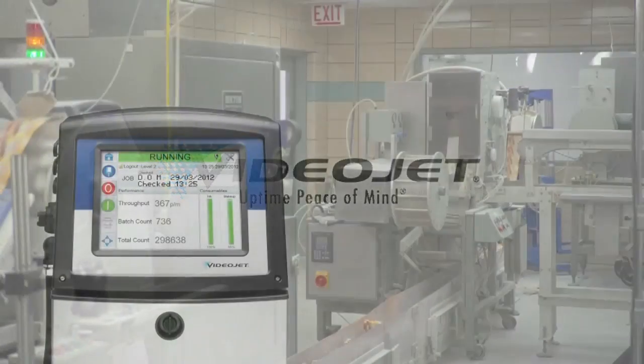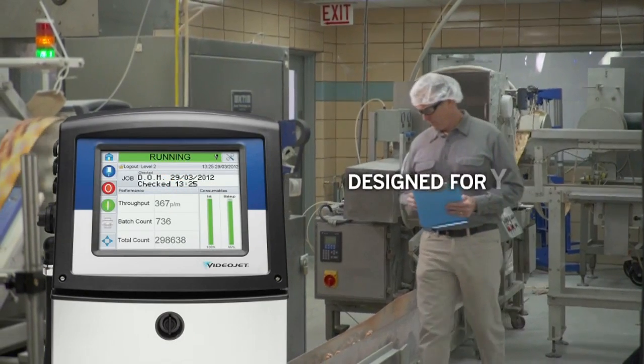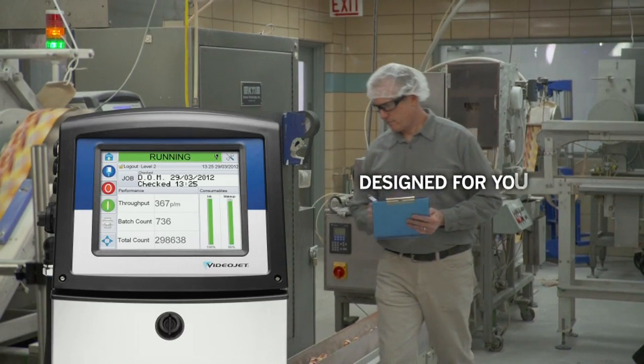The VideoJet 1000 Line Printers with Dynamic Calibration. Helping eliminate the biggest obstacles you face in meeting the goals you set for your operation.